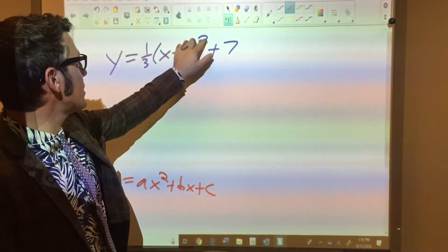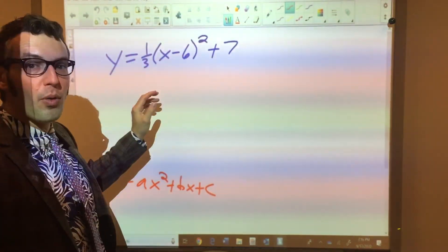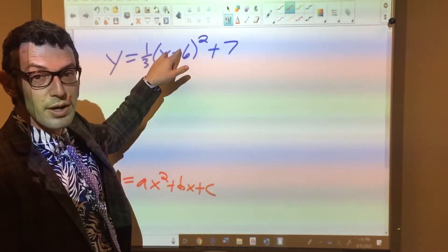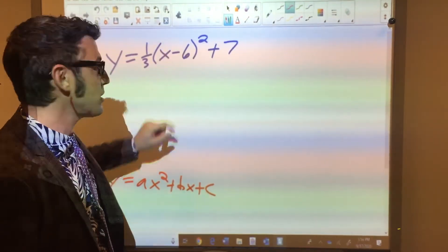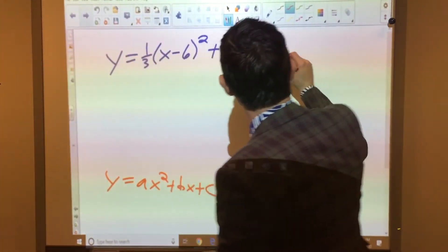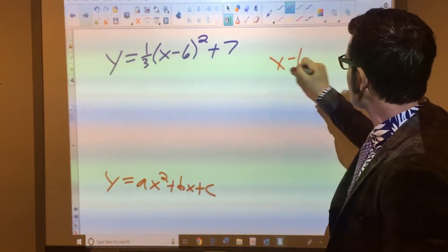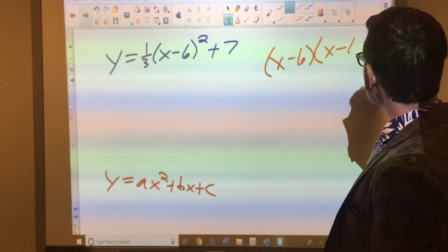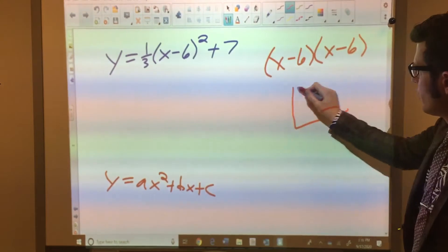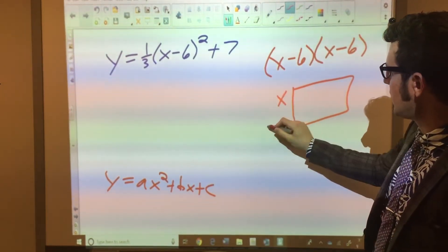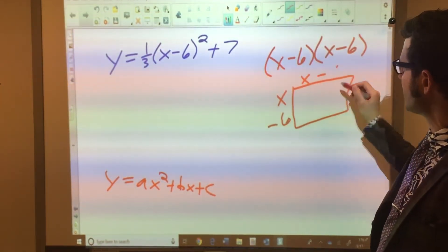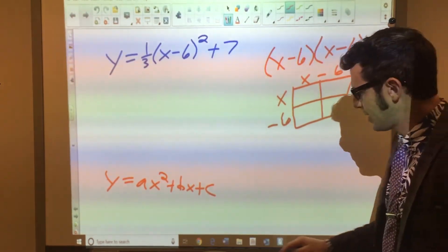For this, one thing people miss, they try to distribute this exponent, but you can only do that if this is multiplication occurring inside or division, this is subtraction. So what you need to do is, off to the side, you either need to FOIL (x - 6) times (x - 6), or you can use the box method, which I have detailed in another video. (x - 6)(x - 6), multiply these together.